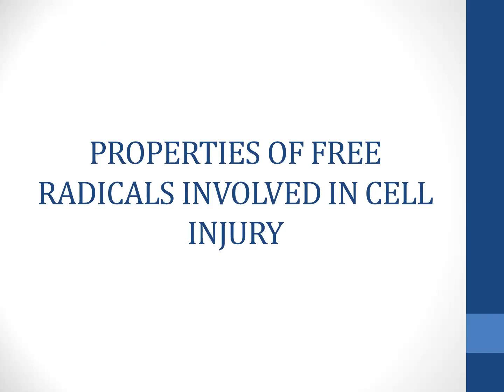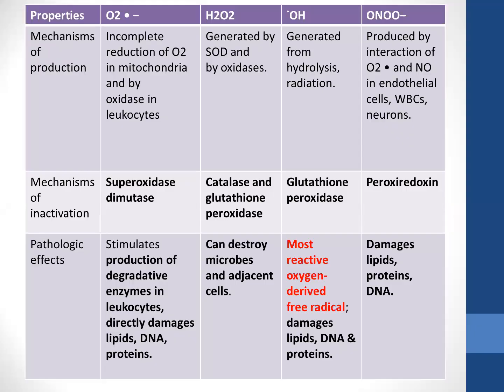The important free radicals involved in cell injury include superoxide, hydrogen peroxide, hydroxyl, and peroxynitrite. These are usually formed during normal metabolic processes, by radiation, or by various white blood cells when they are fighting microorganisms or infections. All these free radicals directly damage lipids, DNA, and proteins, and therefore cause cell damage.